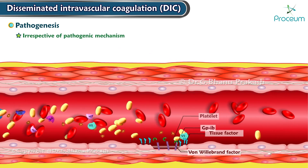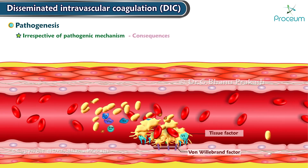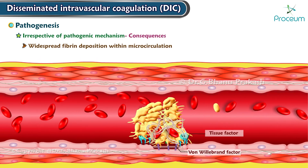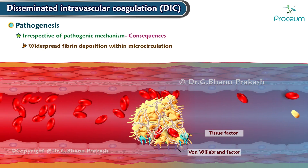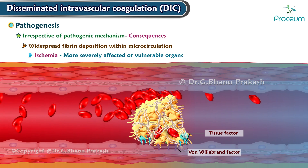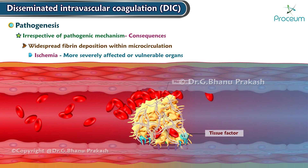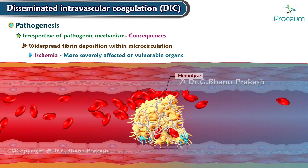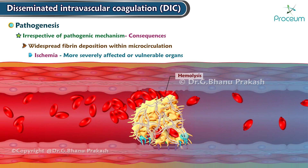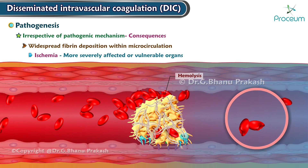Irrespective of the pathogenic mechanism, DIC has two consequences: widespread fibrin deposition within the microcirculation leading to ischemia in the more severely affected or vulnerable organs, and hemolysis due to trauma to red blood cells as they pass through vessels narrowed by fibrin thrombi — microangiopathic hemolytic anemia with schistocytes.